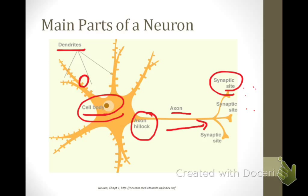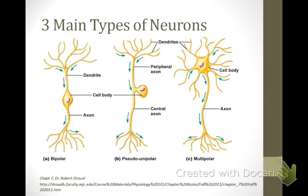There are three main types of neurons: bipolar, pseudounipolar, and multipolar. The normal direction of information flow is from the dendrites to axons in all three cell types. The morphology of the different types of neurons are suited for their physiological functions, and we will discuss a specific example from each cell type.